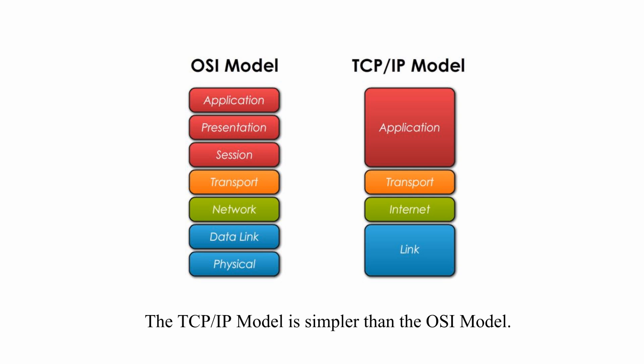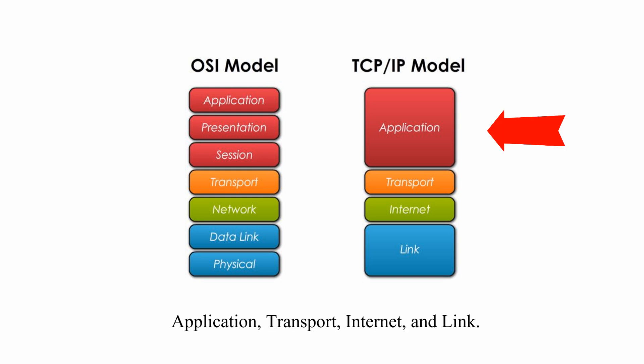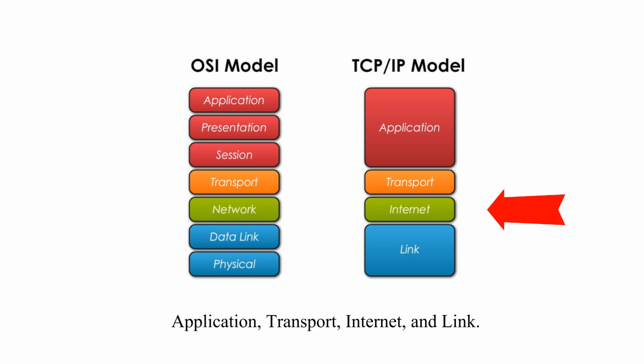The TCP/IP model is simpler than the OSI model. It only has four layers: application, transport, Internet, and link.